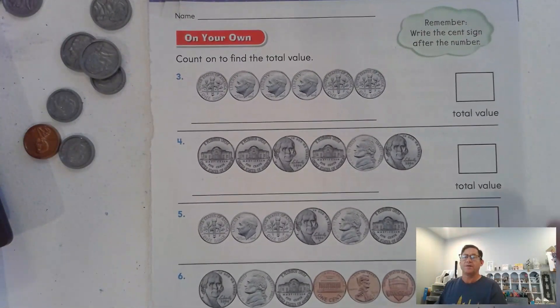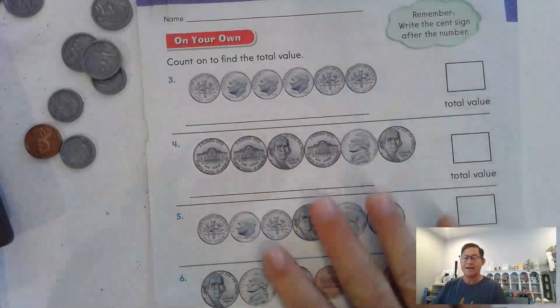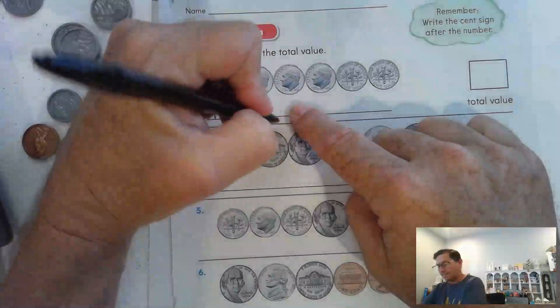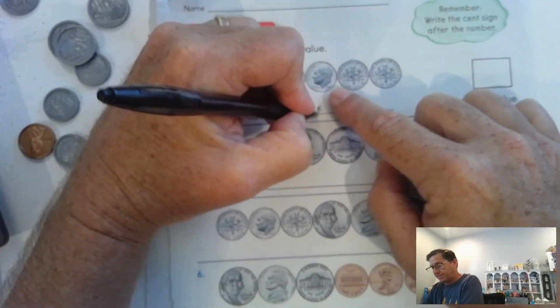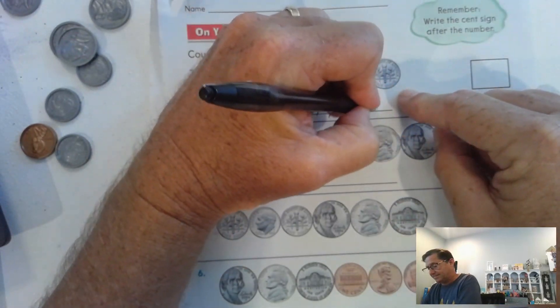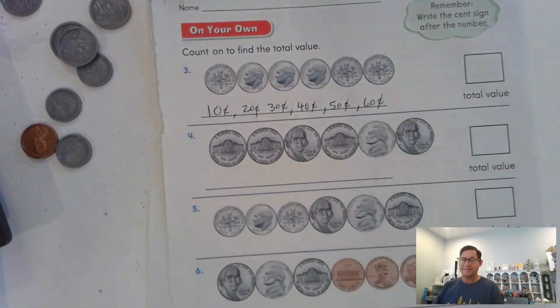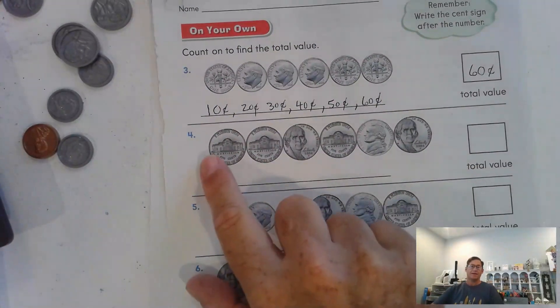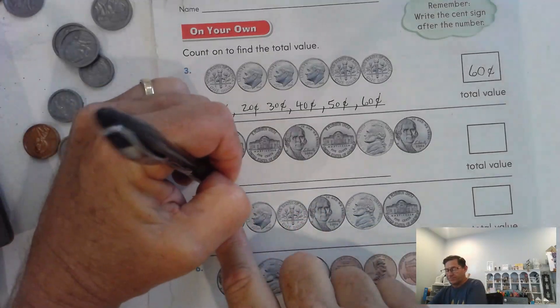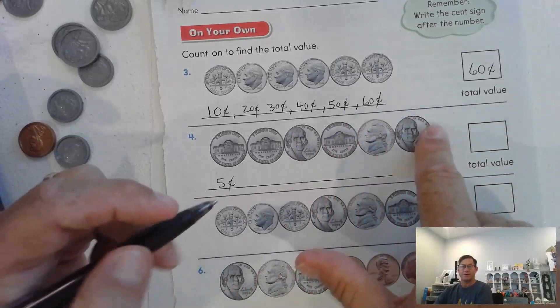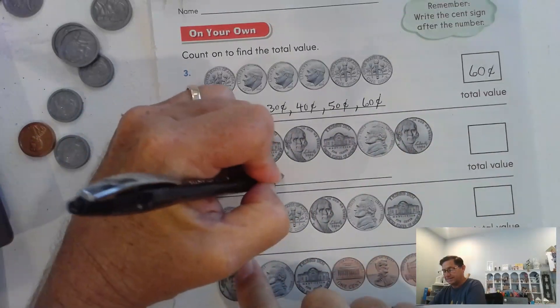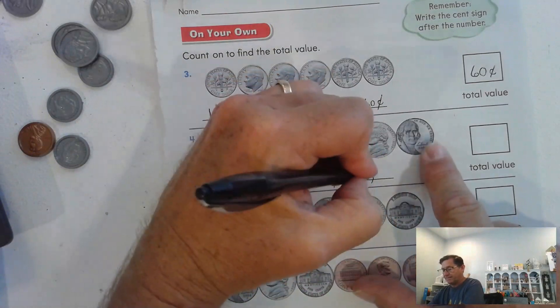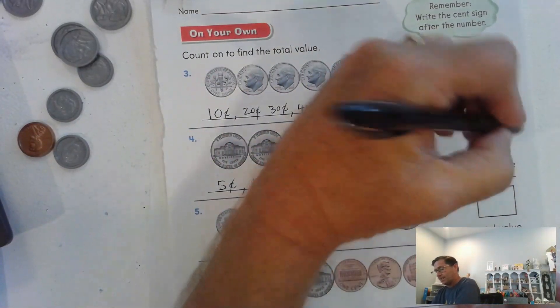Count on to find the value. Remember to write the cent sign after the number. Here we have all dimes: 10 cents, 20 cents, 30 cents, 40 cents, 50 cents, 60 cents. We have six tens or 60, so 60 cents. Number four, we have all nickels: 5, 10, 15, 20, 25, 30. So 30 cents.